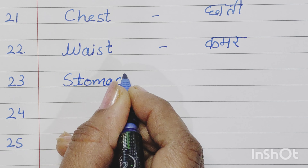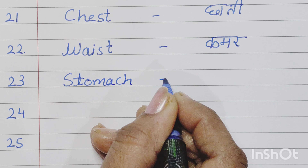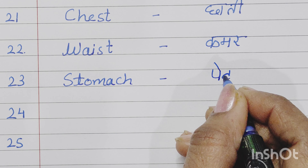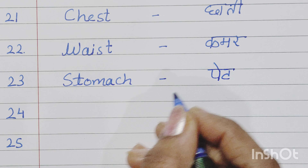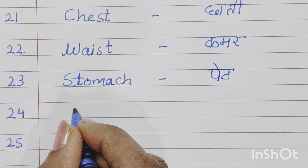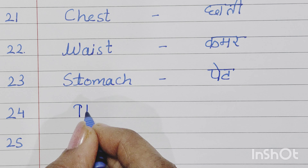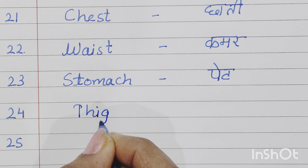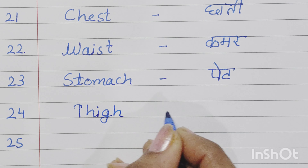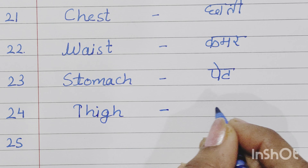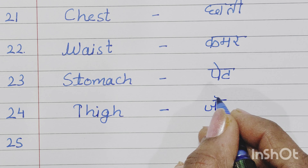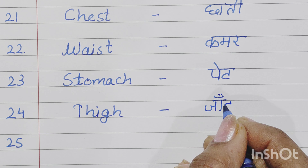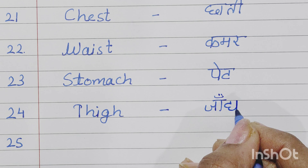Fifteenth is arm, A-R-M, arm means bhuja. Sixteenth number is neck. Neck means gala. We can also call it gurdan.